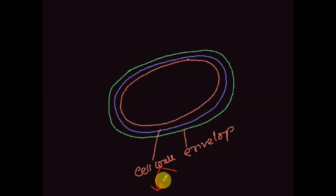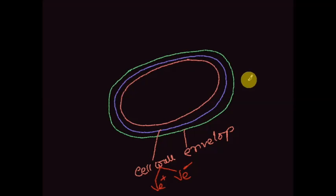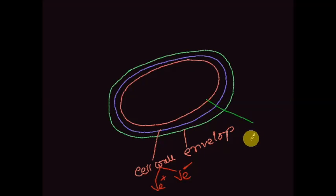Based on these two types of structural material, the bacterial cell wall can be divided into two classes: the first one is gram positive bacteria and the second one is gram negative bacteria. Gram positive bacteria has a very thick peptidoglycan cell wall, and gram negative bacteria has a lipopolysaccharide layer. Inside the bacterial cell wall there is a bilayer membrane called the plasma membrane.